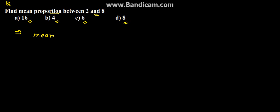The mean proportion between 2 and 8 is found by taking the square root of the product of two numbers. So that is in the form of root a into b when we need to find the mean proportion.